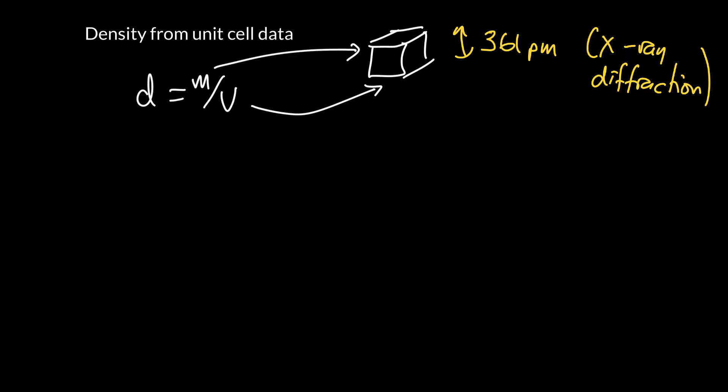And also the way the atoms are arranged in the unit cell gives you a slightly different pattern. So maybe this is a face-centered cubic unit cell. So you get a particular pattern that allows you to say it's face-centered cubic. Can we take that information and can we find the density? And by the way, this is going to be an iron crystal. So it turns out, yes we can.